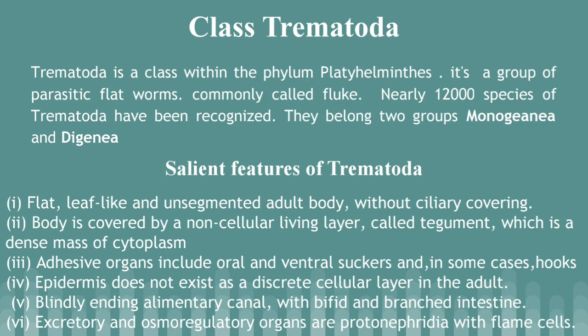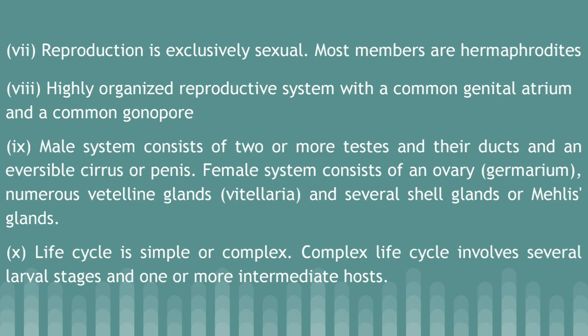Salient features of Trematoda: The adult body is flat, leaf-like, and unsegmented, without ciliary covering. The body is covered by a noncellular living layer called tegument, which is a dense mass of cytoplasm. Adhesive organs include oral and ventral suckers, and in some cases hooks. Epidermis does not exist as a discrete cellular layer in adults. The alimentary canal is blindly ending with a bifid and branched intestine. Excretory and osmoregulatory organs are protonephridia with flame cells. Reproduction is exclusively sexual. Most members are hermaphrodites. Life cycle is simple or complex, with complex cycles involving several larval stages and one or more intermediate hosts.